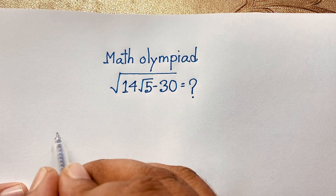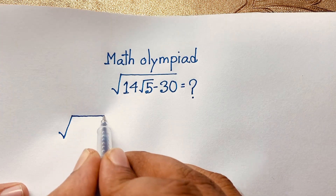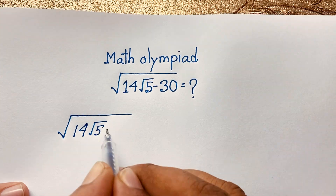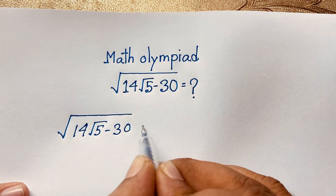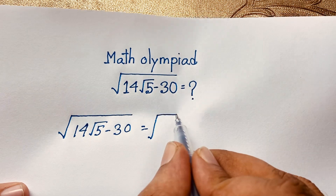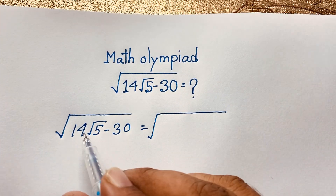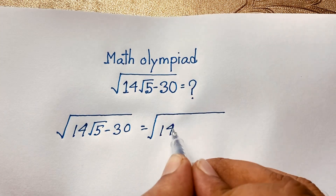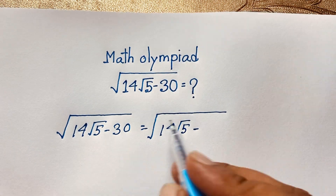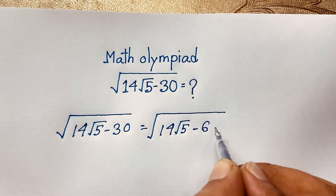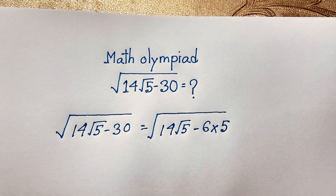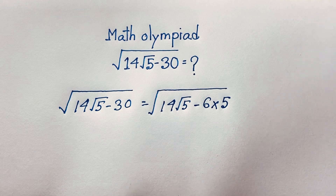Our question is: square root of (14√5 minus 30). I can write 14 as is, and for 30, I can write it as 6 times 5, since 6 times 5 equals 30.